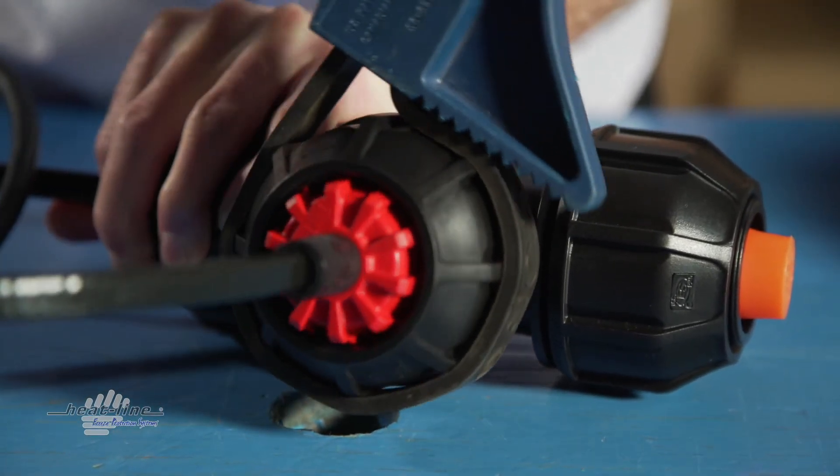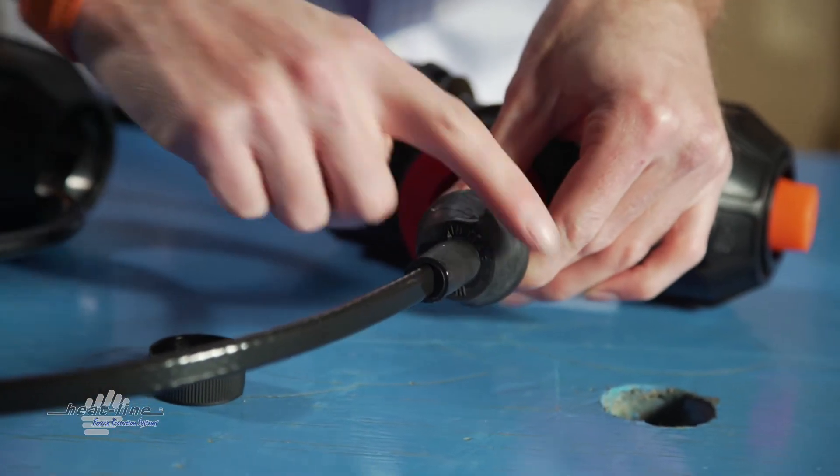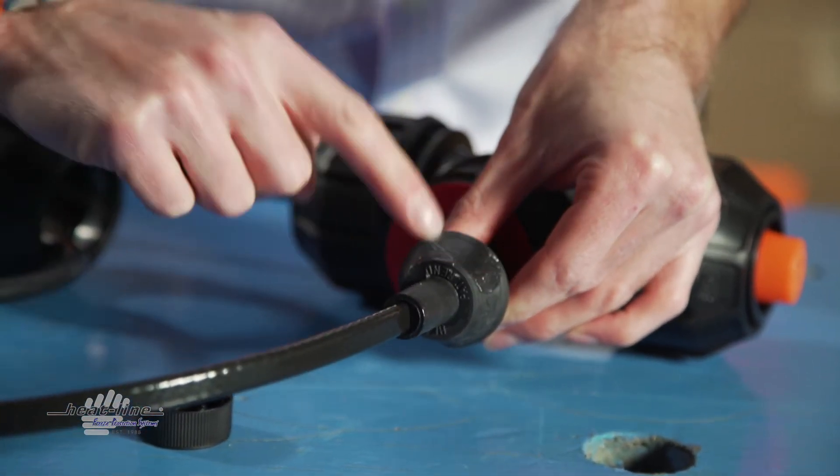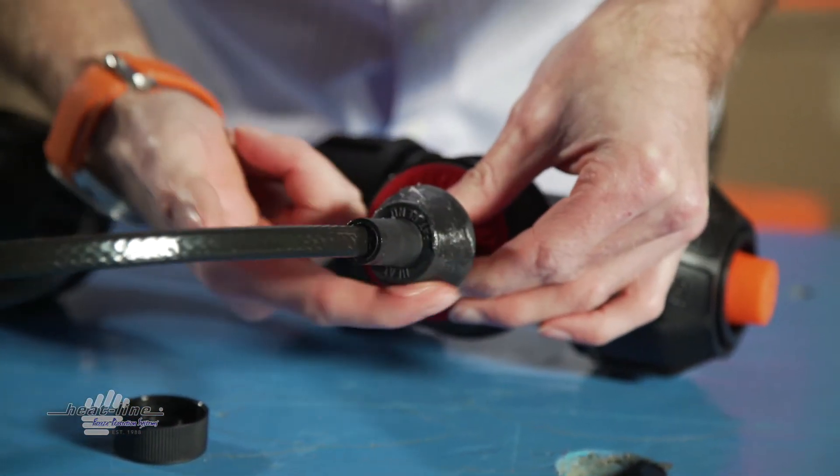If the heat line grommet turns with the nut, stop immediately. Add additional lubricant as viewed in the previous step and try again.